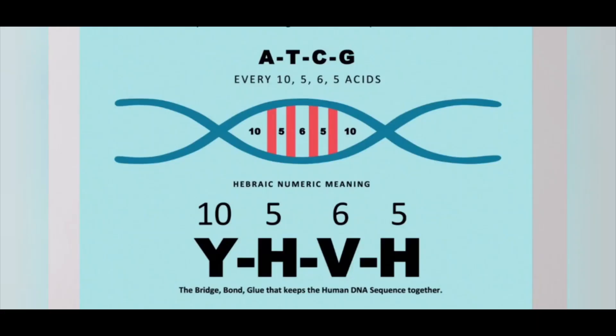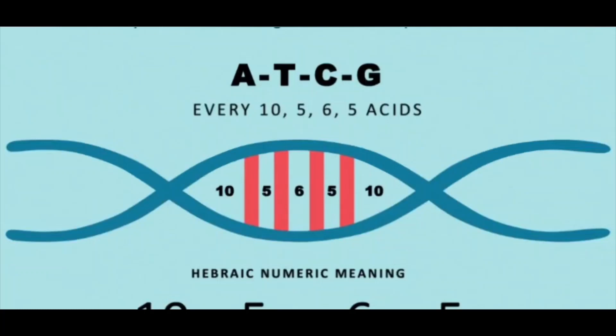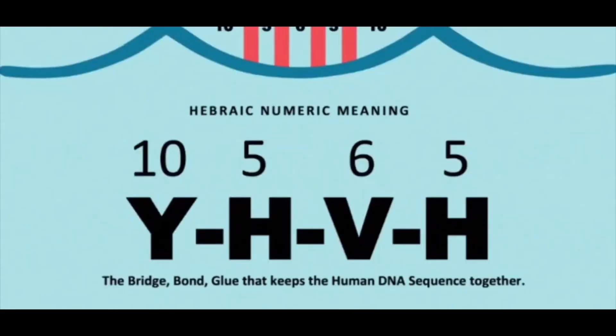At the base of our DNA, we have four main amino acids: A, T, C, G — adenine, thymine, cytosine, and guanine. And that is also comparable in the same number pattern as Yahweh: 10-5-6-5, the name of God.